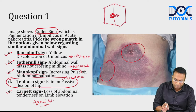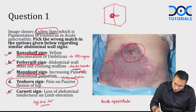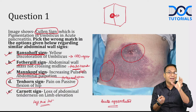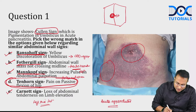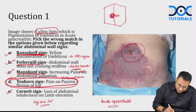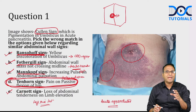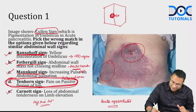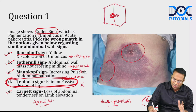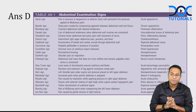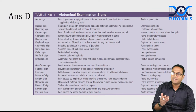Ten-horn sign is seen in acute appendicitis — pulling the testis causes pain in the appendix area. The wrong match in the question is D. Aron's sign is appendicitis pain on pushing gas through the rectum. There is an extraordinary table from Sabiston mentioning all abdominal signs. Explanations are available in the app, so no need to write notes.